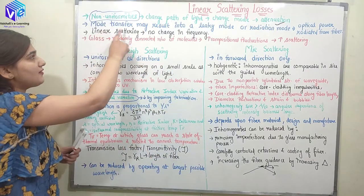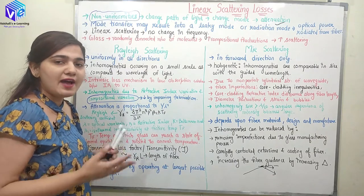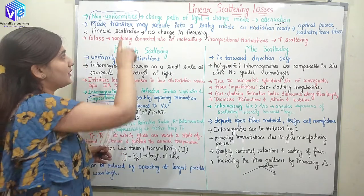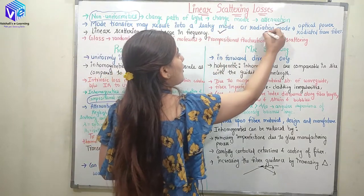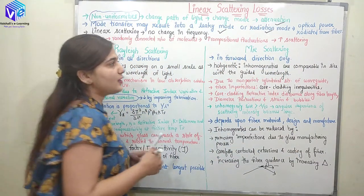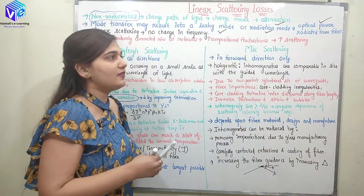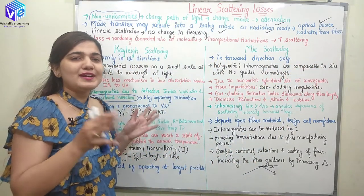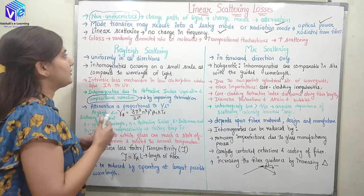So here we have mode transfer. The non-uniformities in the glass fiber cause mode transfer resulting in leaky modes or radiation modes. Both of them cause optical power loss in the form of radiation out from the fiber. The power is going away from the fiber and this is how our signal gets attenuated.